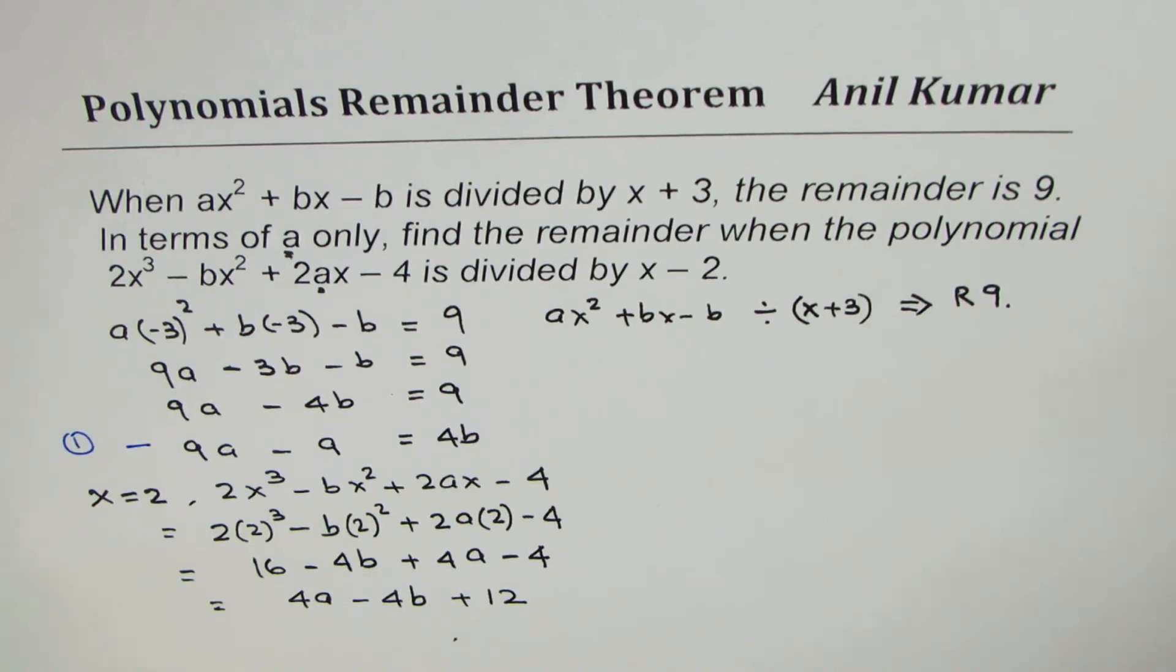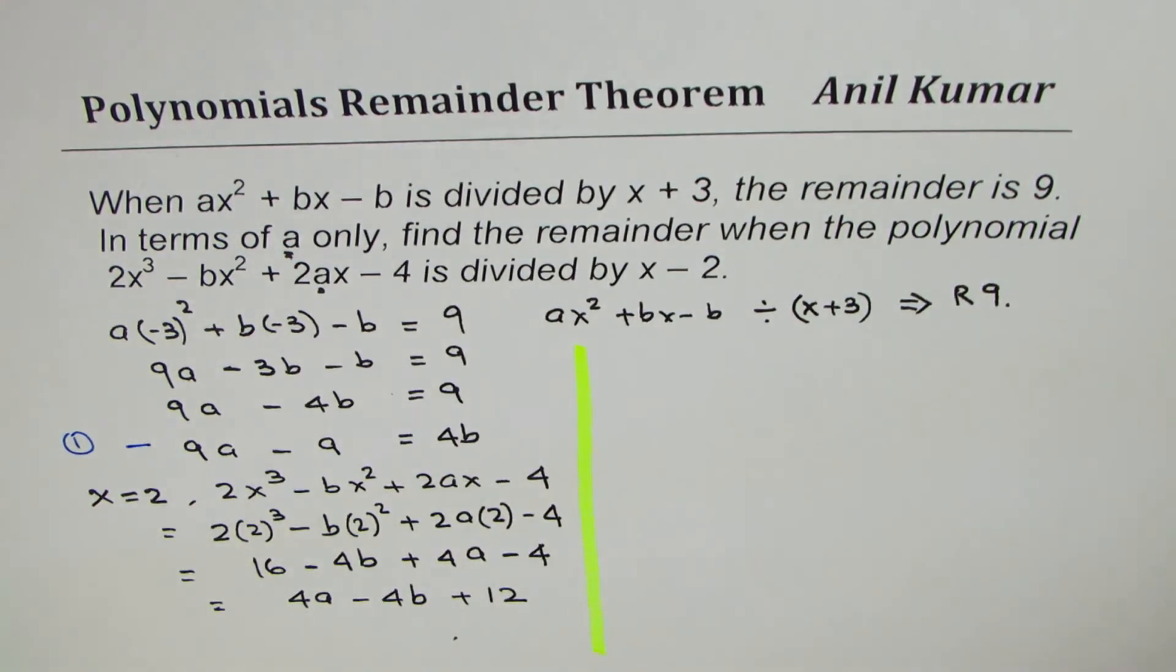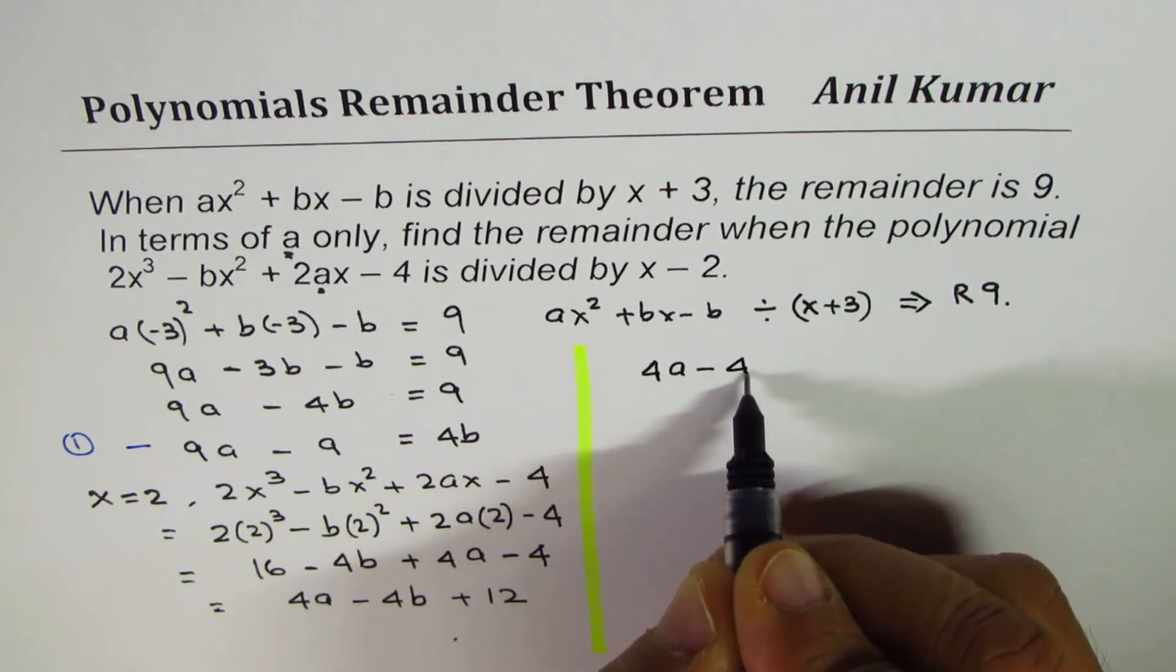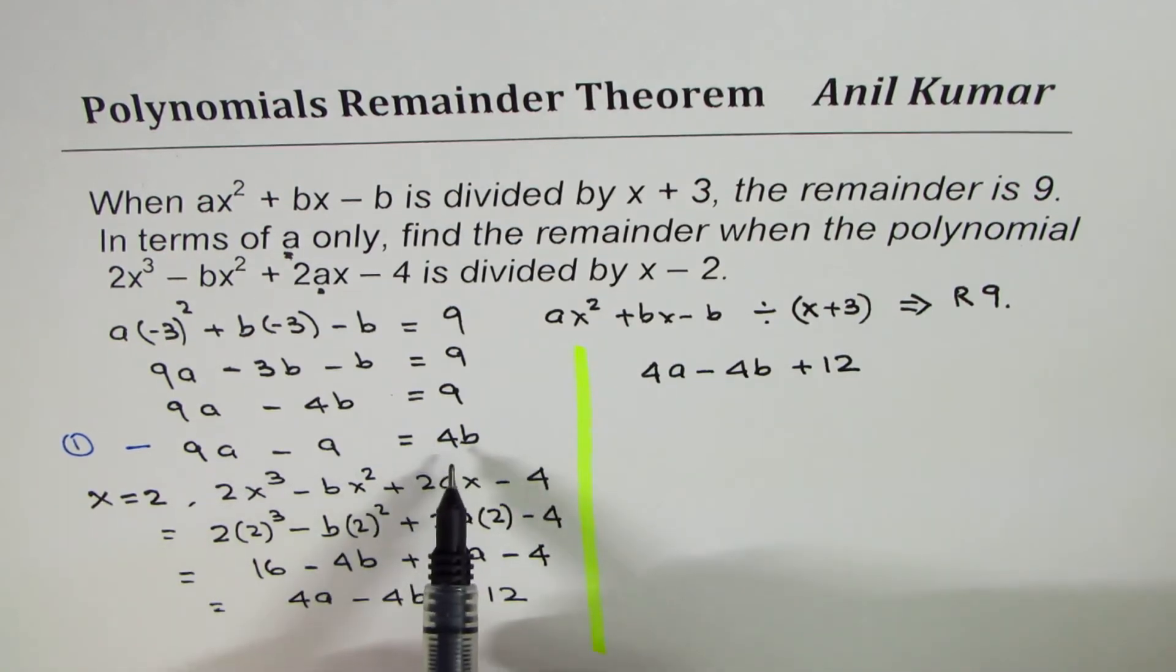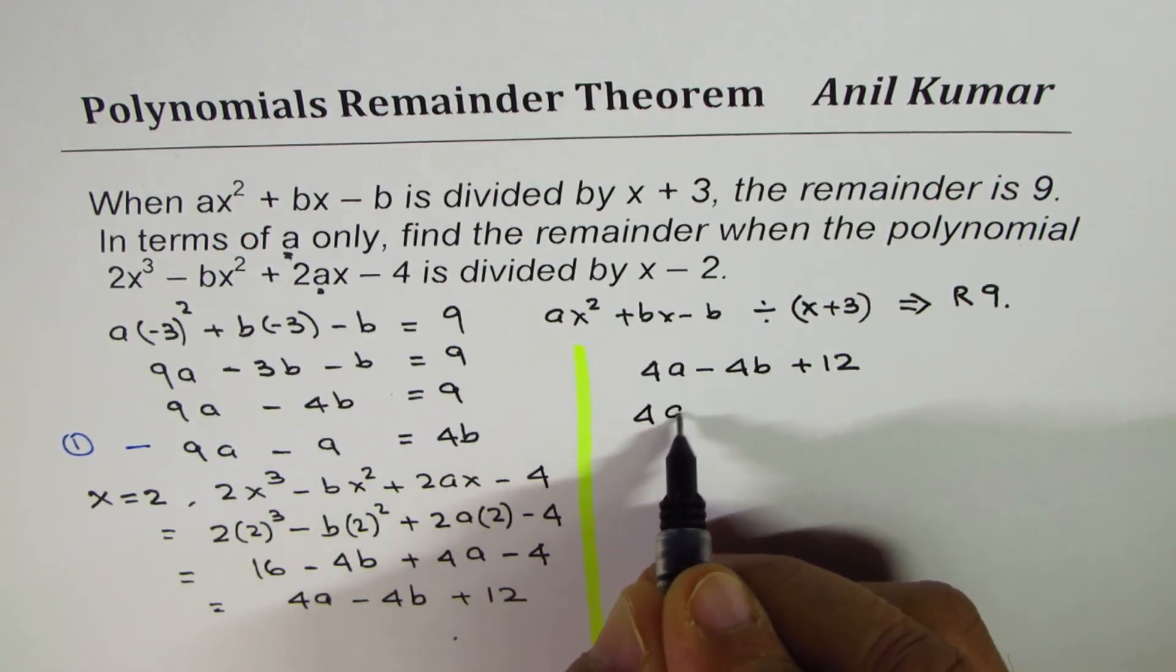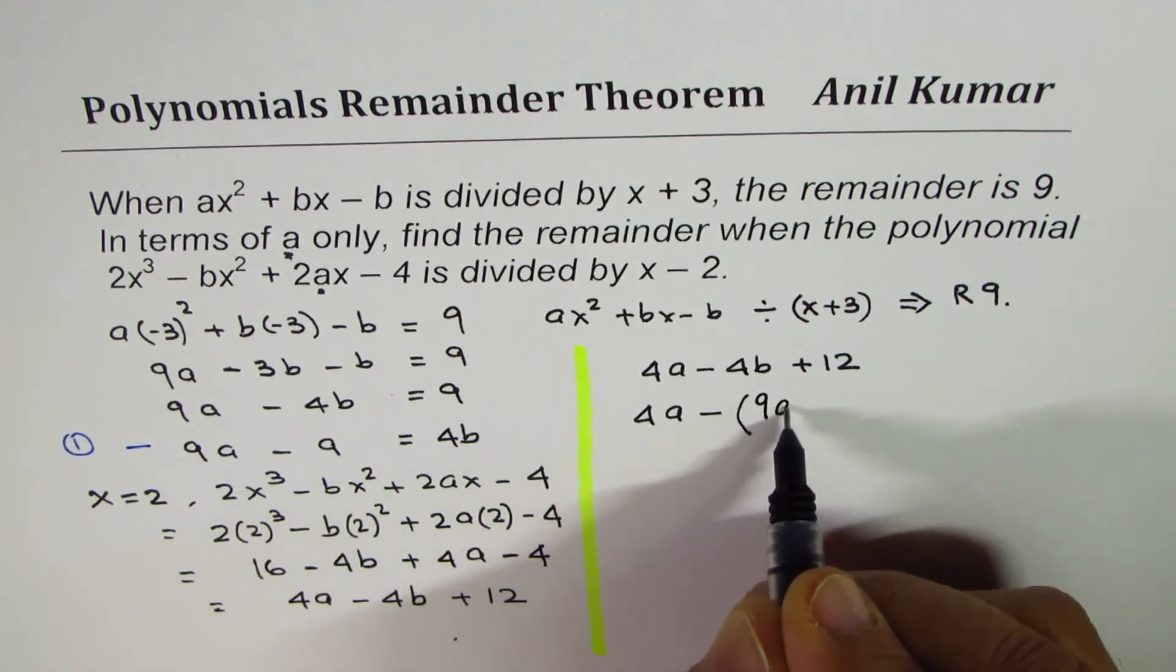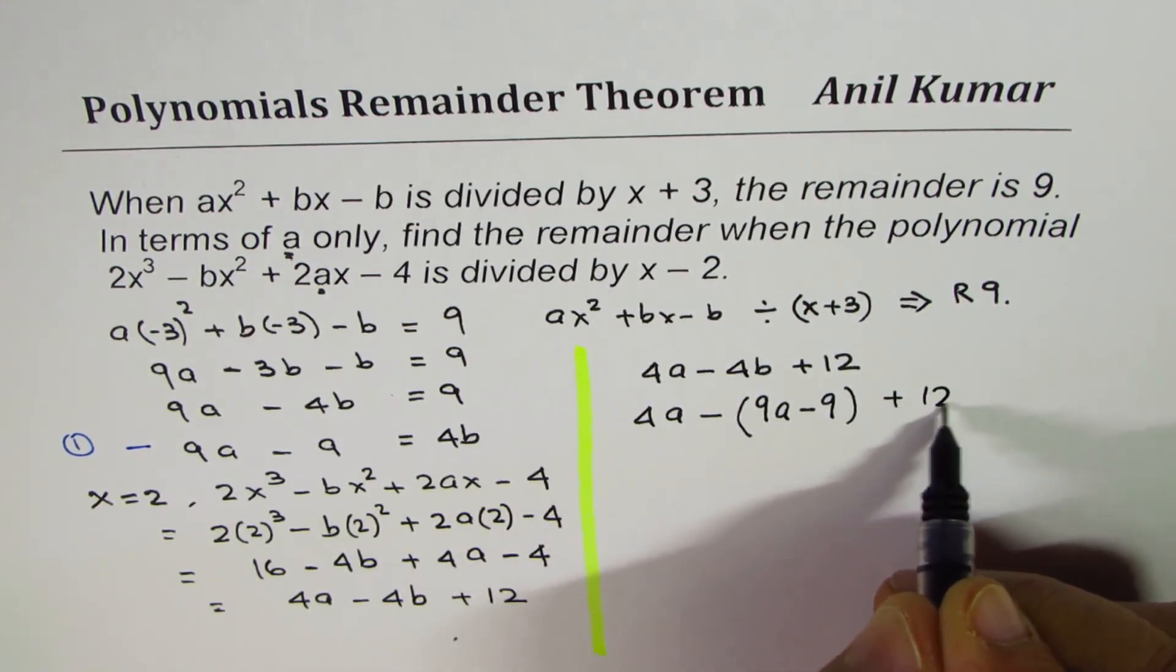And now we know what 4b is. So we'll substitute that value for 4b. So let me rewrite this equation. We have 4a minus 4b plus 12. In this we are going to substitute 4b as 9a minus 9. So we can write this as 4a minus 9a minus 9, and we have plus 12.